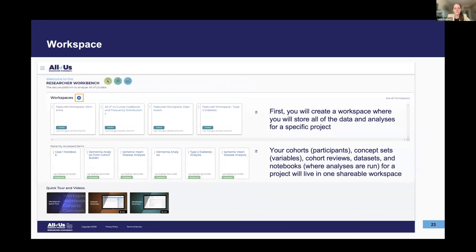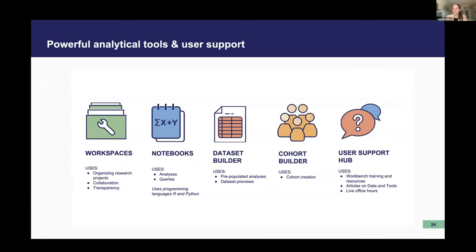To encourage folks to get started, All of Us offers a starter amount of $300 for computation within their secure cloud environment, which should be plenty for a standard study or many standard studies. Costs can get higher with genomic data, but plans for storage and computation can be arranged beyond that $300. Within the workbench, you can see all your workspaces — each workspace represents a single project — containing various components including the cohort, associated variables, and notebooks with R or Python code. These workspaces are shareable, which helps increase collaboration.